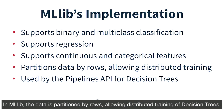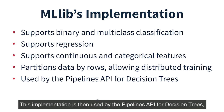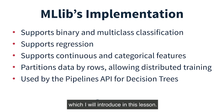In MLlib, the data is partitioned by rows, allowing distributed training of Decision Trees. This implementation is then used by the Pipelines API for Decision Trees, which I'll introduce in this lesson.